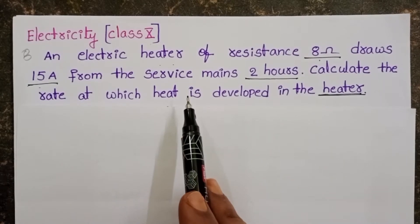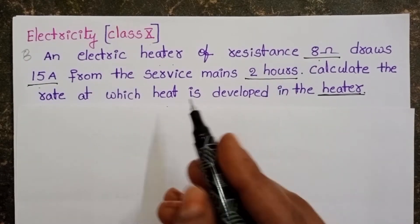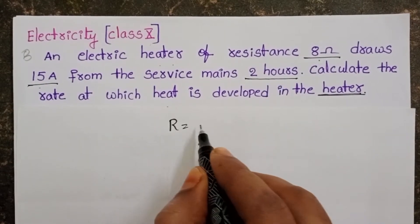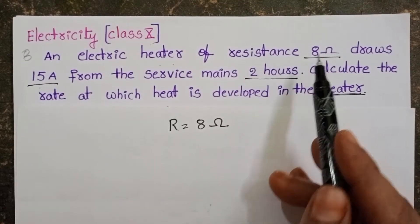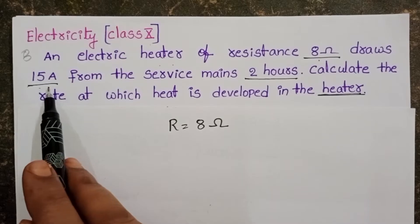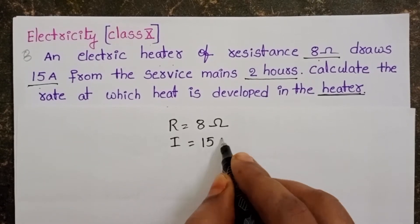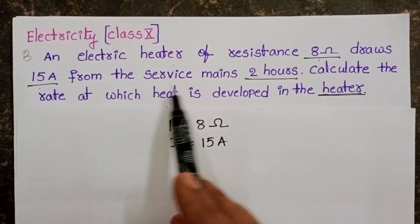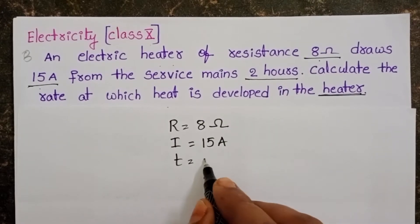In this question, the given electric device is an electric heater. Resistance of the electric heater is 8 ohms. Whenever this heater is connected to the power supply, it draws a current of 15 amperes, I equals 15 amperes. And it is utilized in the time 2 hours. Given time is 2 hours.